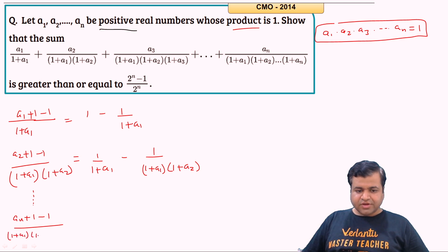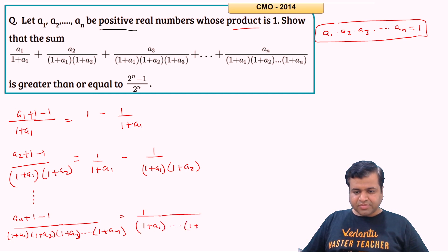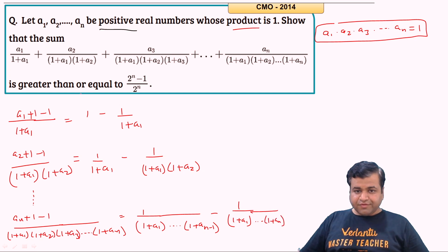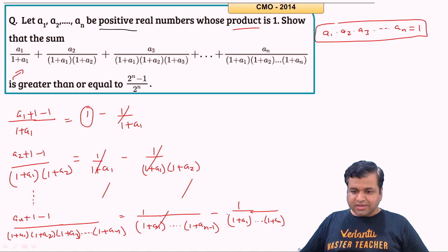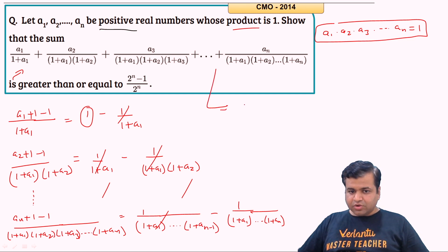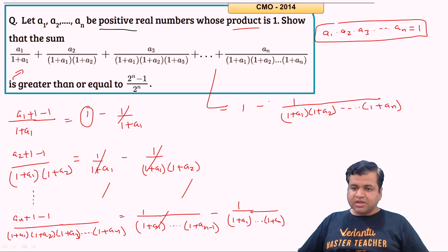In the denominator we have (1+A1)(1+A2)···(1+AN). So after telescoping, we get 1/(1+A1)···(1+AN_{k-1}) minus 1/(1+A1)···(1+AN). When we add all terms, consecutive terms cancel out, leaving only the first and last terms. The final sum equals 1 − 1/((1+A1)(1+A2)···(1+AN)).